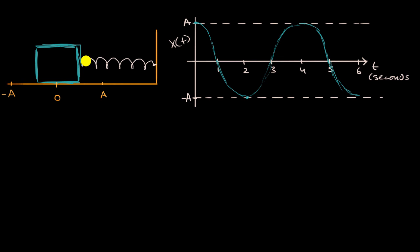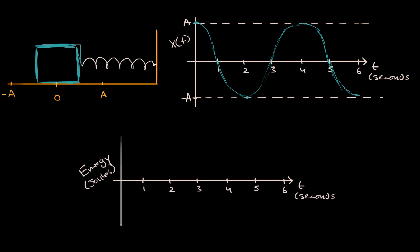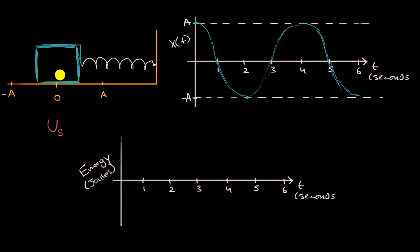What we want to think about in this video is how that motion relates to energy. At time equals zero, the box is at position A and the spring is compressed. We're dealing with a box-spring system, and we're going to assume no energy is added to or taken away from the system. So right at time zero, with the spring compressed, the box-spring system is going to have some elastic potential energy.